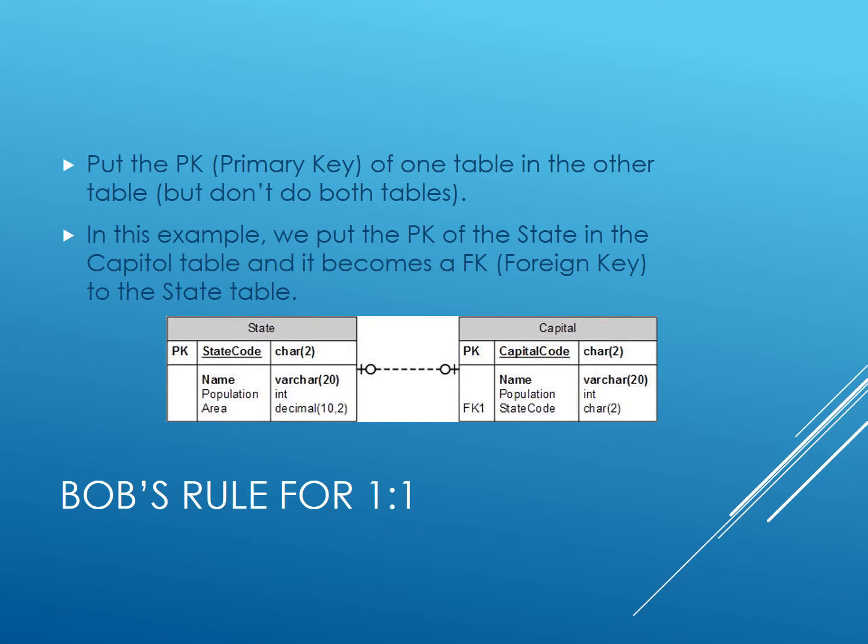Bob's Rule of a one-to-one relationship says to put the primary key of one table in the other table. Also, set the cardinality in Visio to one comma zero.